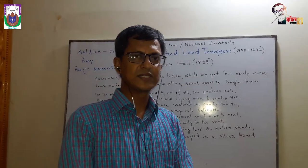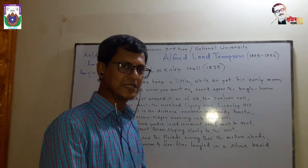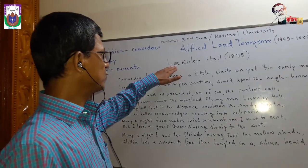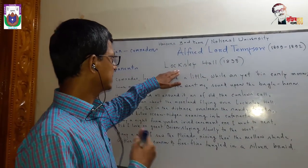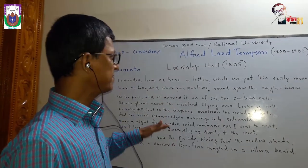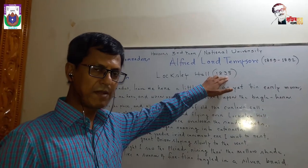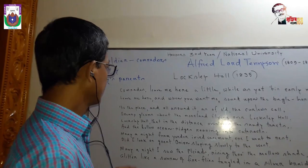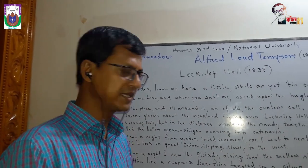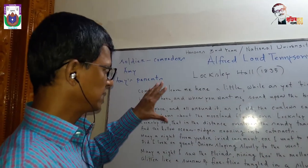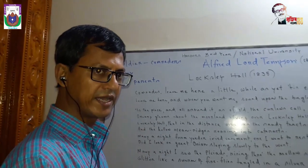Now is the time for analyzing the poem. Tennyson is the most representative poet of the time, and Locksley Hall is the poem where he upheld the age very accurately and meticulously. There is no actual hall by the name of Locksley Hall in reality — it is the creation of his imagination. It's a long poem consisting of 190 lines, composed in 1835 and published in 1842.